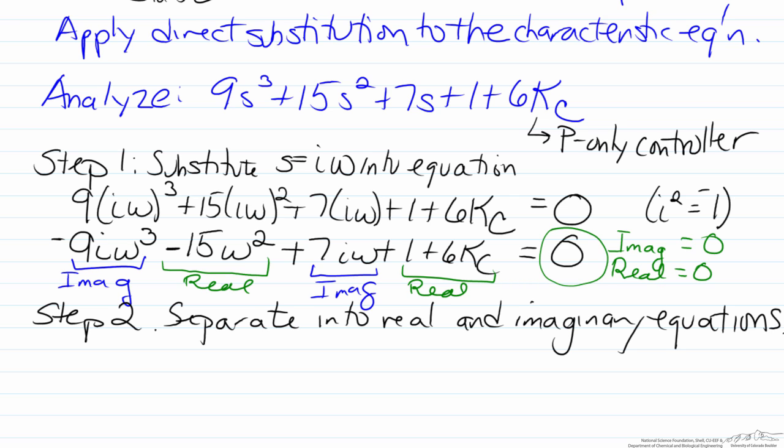So step two of this is to separate into the real and imaginary equations. When we do this, for the imaginary we'll have negative 9i omega cubed plus 7i omega equals zero, and for the real part we'll have negative 15 omega squared plus 1 plus 6kc equals zero.